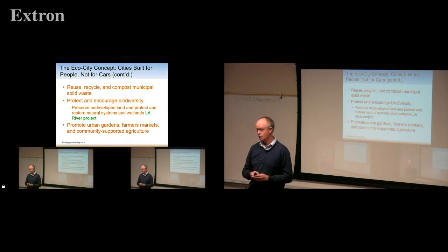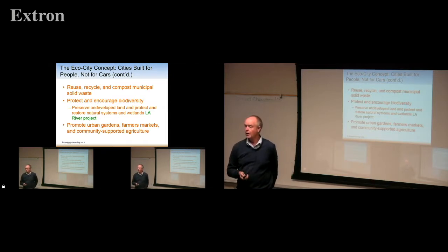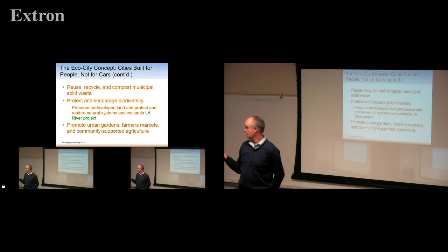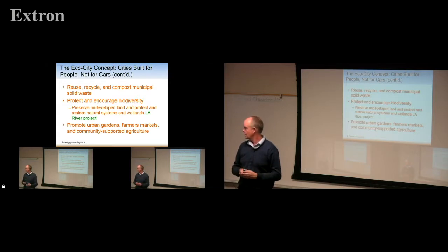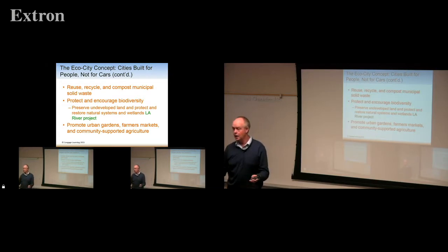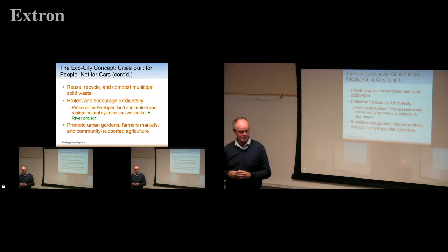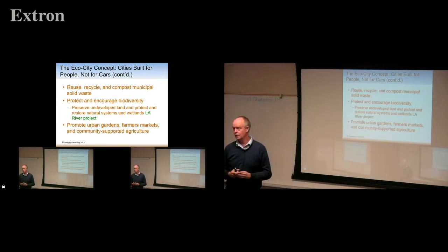There was one community supported agriculture project in LA that they closed down recently because they were planning to build a factory. Community supported agriculture is more of a commercial venture where the community is involved, whereas a community garden is just taking an open lot — like the big one near Hollywood we saw at a wedding recently.